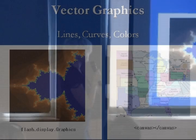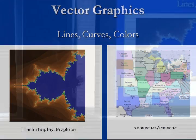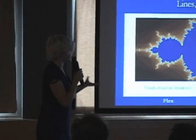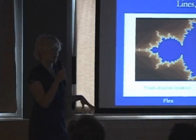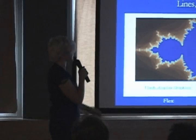Vector graphics — Flash has always been amazing at this. HTML5 has been hard to do in this area. We've had SVG and VML, but finally HTML5 introduced the Canvas tag so we can do good graphics fast.